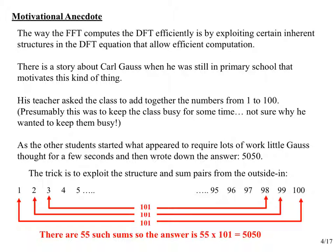Let's motivate what we're really doing here. How is it that we can take a DFT, which has an equation telling us how to compute it, and somehow get the same final results but with less computation? It all has to do with the structure inherent in the computation and how we break that structure down. I'll tell a little story about Carl Gauss, one of the most famous mathematicians. The story may not be entirely accurate, but it makes a nice point about finding computational efficiencies.